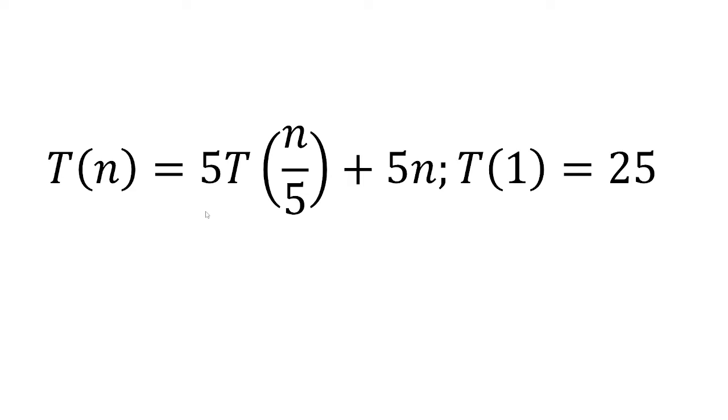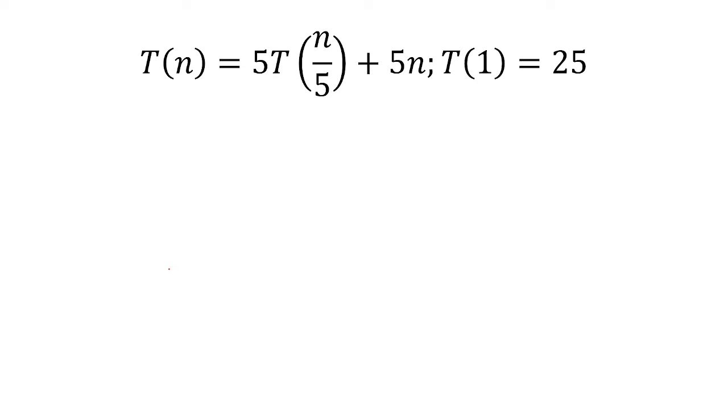T of n is equal to 5 times T of n over 5 plus 5n, where T of 1 is equal to 25. Let's use backward substitution to solve for T of n.